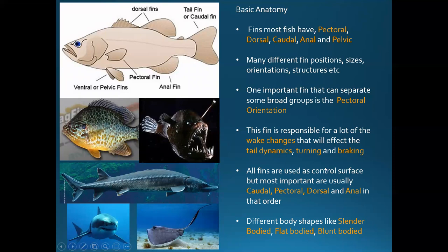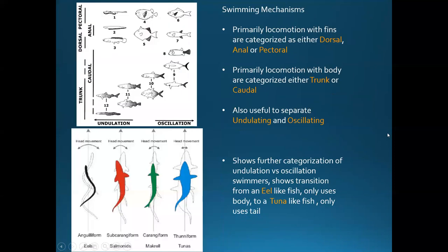You can also separate some broad groups by talking about their body shape. Fish like this sturgeon we might consider a slender body fish, while this sunfish we could consider a flat-bodied fish, and this anglerfish might be considered a blunt body fish. Two broad groups are fish who use their fins to swim and fish who use their bodies and tails to swim.